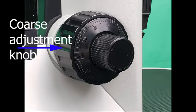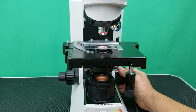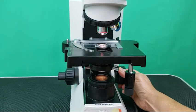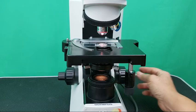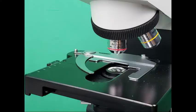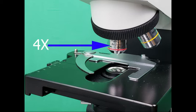Coarse adjustment knob: The larger knobs on either side of the base of the arm that allow preliminary focusing. Turning them produces relatively rapid movement of the stage, bringing it closer to or farther from the objective lens. The coarse adjustment knob should only be used with the scanning power of 4x in order to avoid contacting the objective lens with the microscope slide.